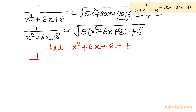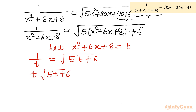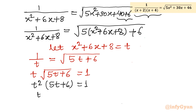After the substitution, LHS is 1/t and RHS is √(5t+6). Cross-multiplying gives t√(5t+6) = 1. Squaring both sides to remove the square root (noting extraneous solutions may be introduced): t²(5t+6) = 1, which gives the cubic equation 5t³ + 6t² − 1 = 0.